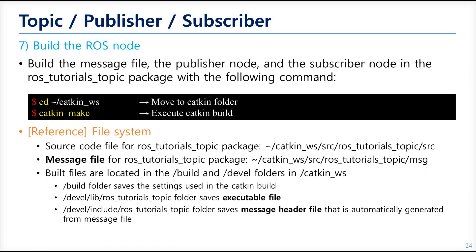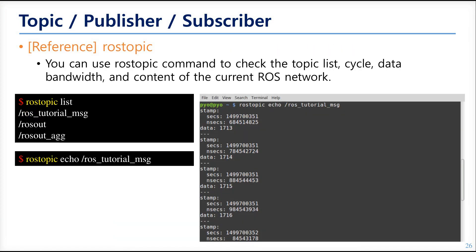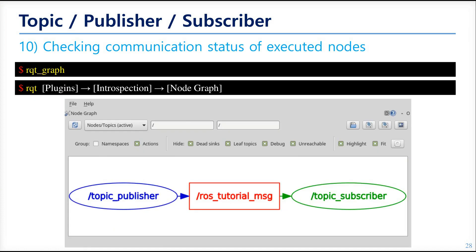We have prepared everything to see how the nodes will run. Go to the catkin workspace folder and run catkin_make — it compiles the sources and builds the ROS executable files. Run the publisher node with the following command; your terminal will show the messages published by the topic publisher node. You can do a quick check of the topic messages by echoing the topic. Next, run the subscriber node — the terminal will show the data received from the publisher. Don't terminate those nodes; check the connection using the RQT graph, which shows the topic publisher node sending to the topic subscriber node through the ros_tutorial_msg topic.